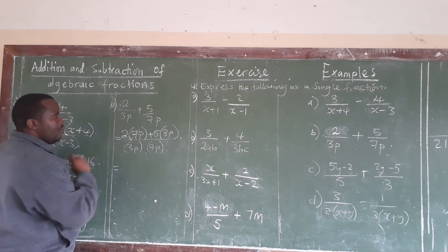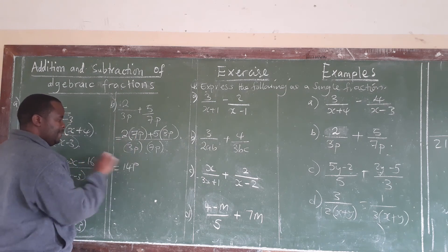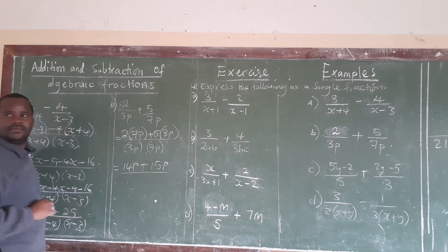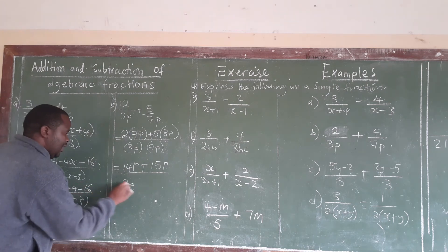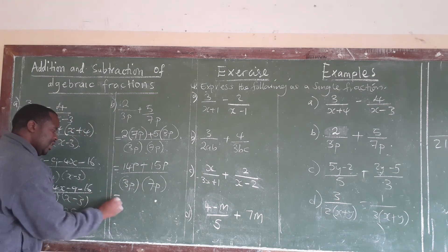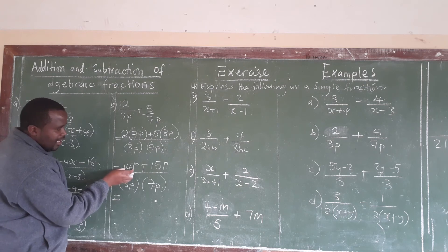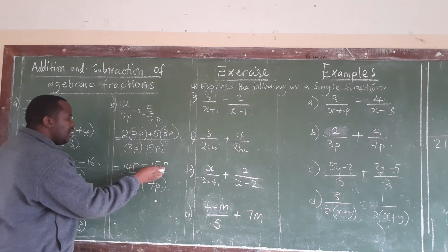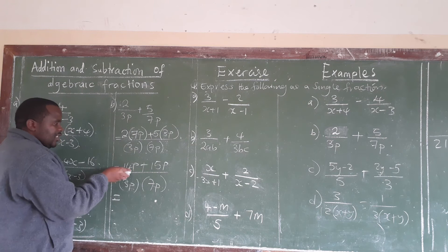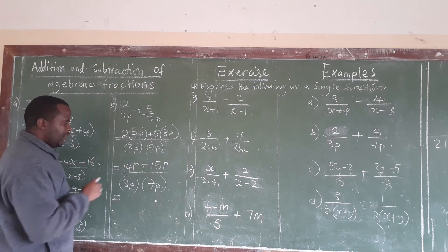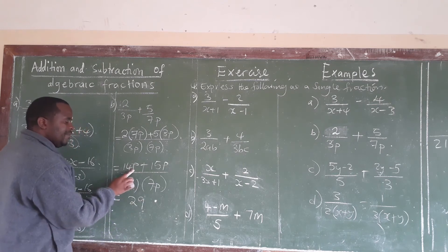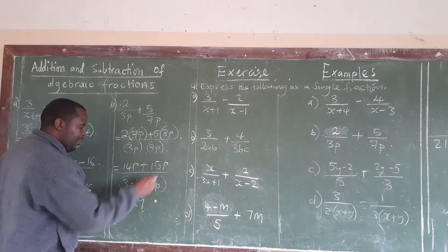So this will be equal to: when you multiply, you get 14P plus 15P, everything divided by 3P in brackets times 7P in brackets. Then 14P plus 15P — you add the numerical values. What is 14 plus 15? That gives 29. Because these terms have the variable P, you also keep the P, giving 29P.